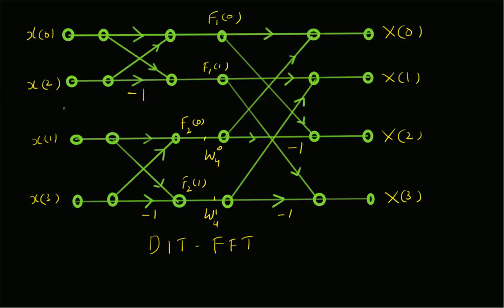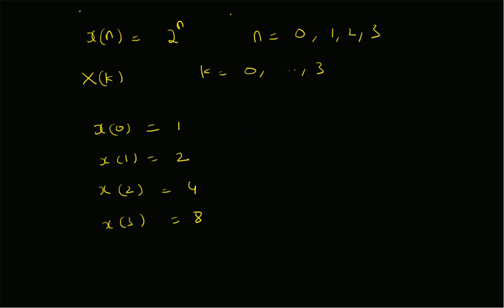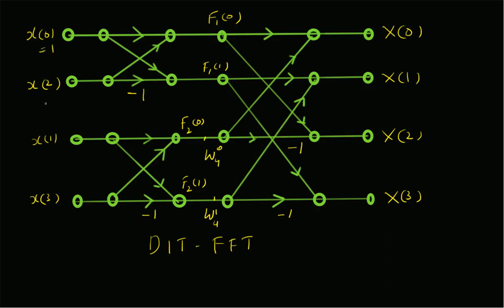For this purpose, we are going to use the butterfly diagram of the four-point DFT using the DIT-FFT algorithm. We are given the inputs in bit-reversed order: x(0), x(2), x(1), and x(3). That means the inputs are 1, 4, 2, and 8 respectively.